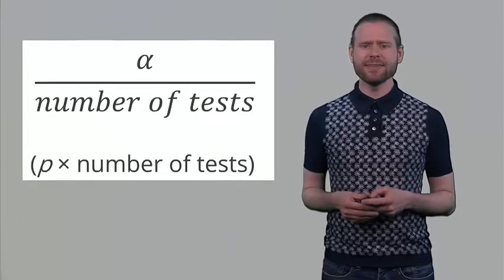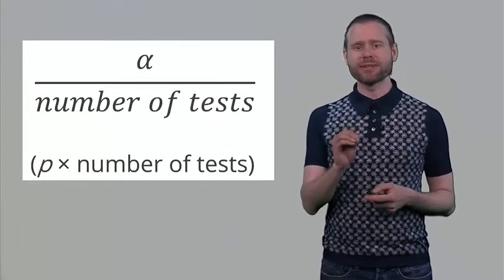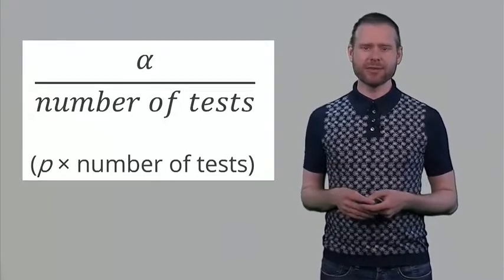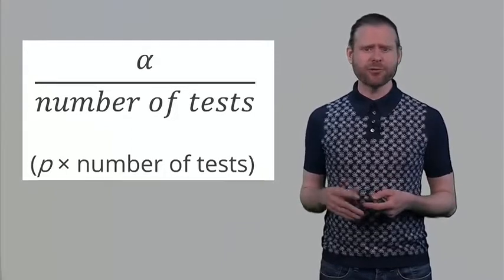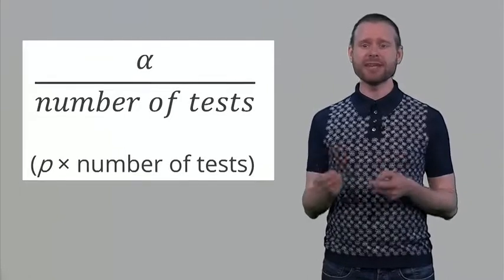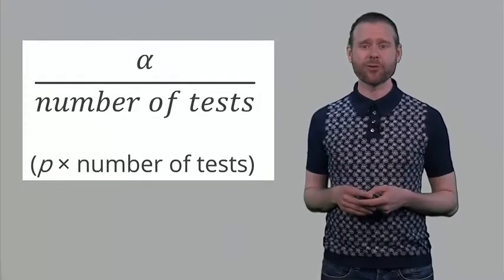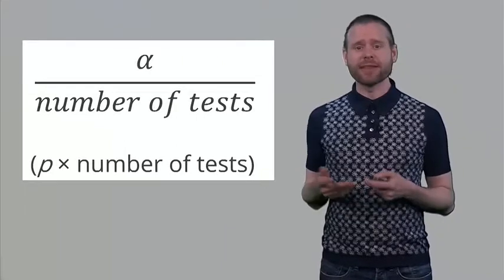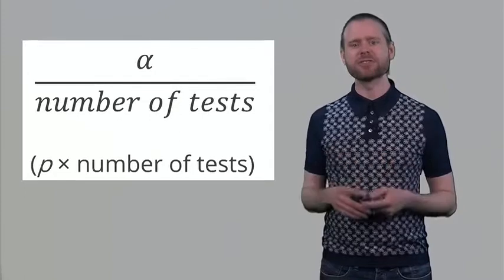The Bonferroni correction is very easy to apply. Instead of using 0.05 for a single test, you divide the alpha level by the number of tests you perform. If you do two tests, divide 0.05 by 2 to get a 0.025 alpha level for each individual test. In the 2x2x2 ANOVA example, you would divide the alpha level by 7. Alternatively, you can multiply the p-value by the number of tests and then use the 0.05 alpha level for each specific test.